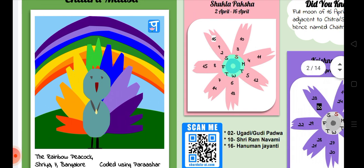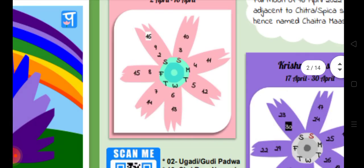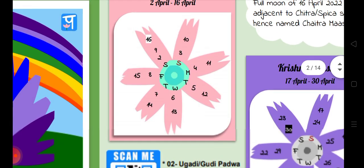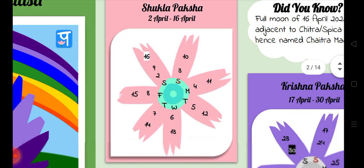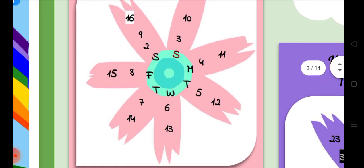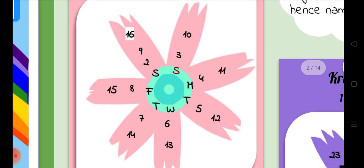Now let us take a look at Shukla Paksha. This flower is also created using the Sharada Parashar environment, and the new year starts from Shukla Paksha, 2nd April to 16th April. You can see that the flower has 7 petals.